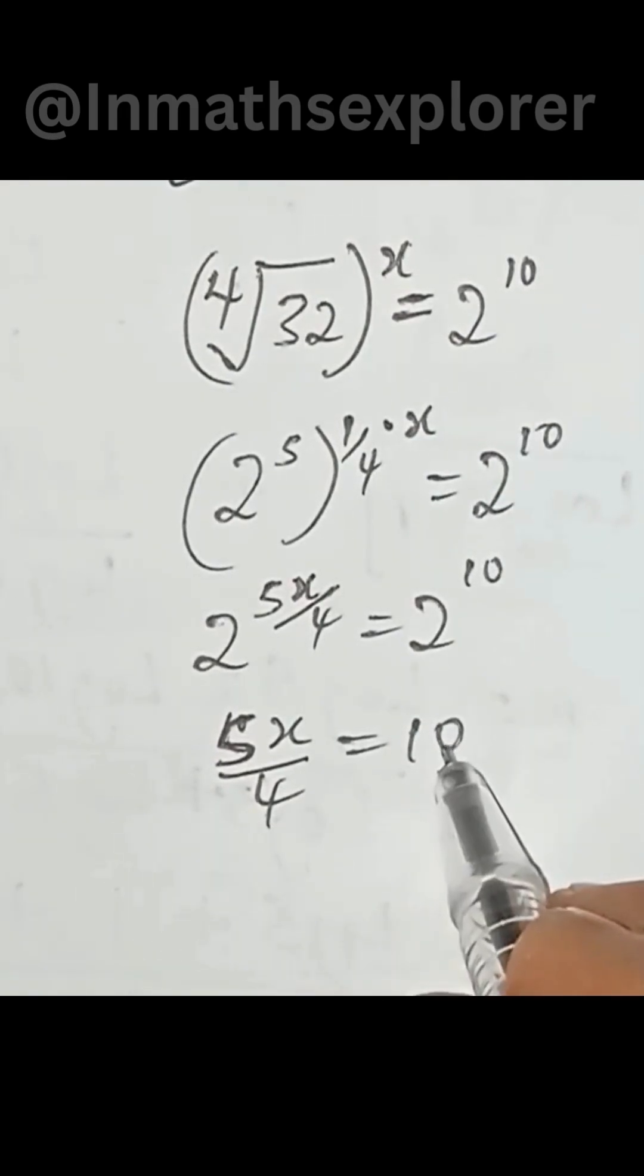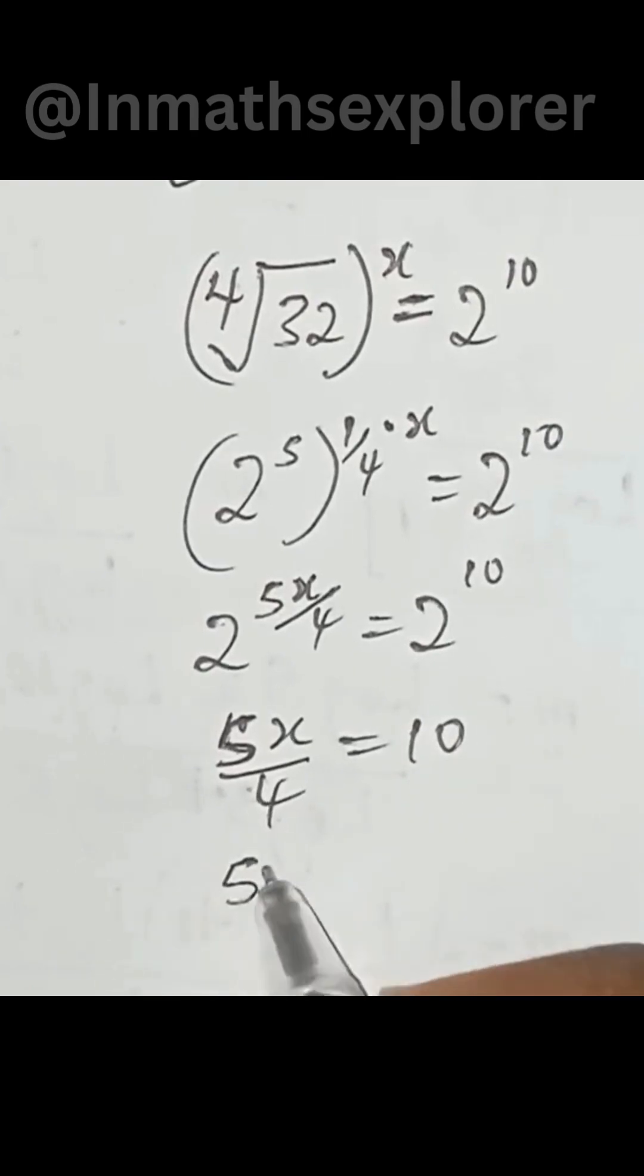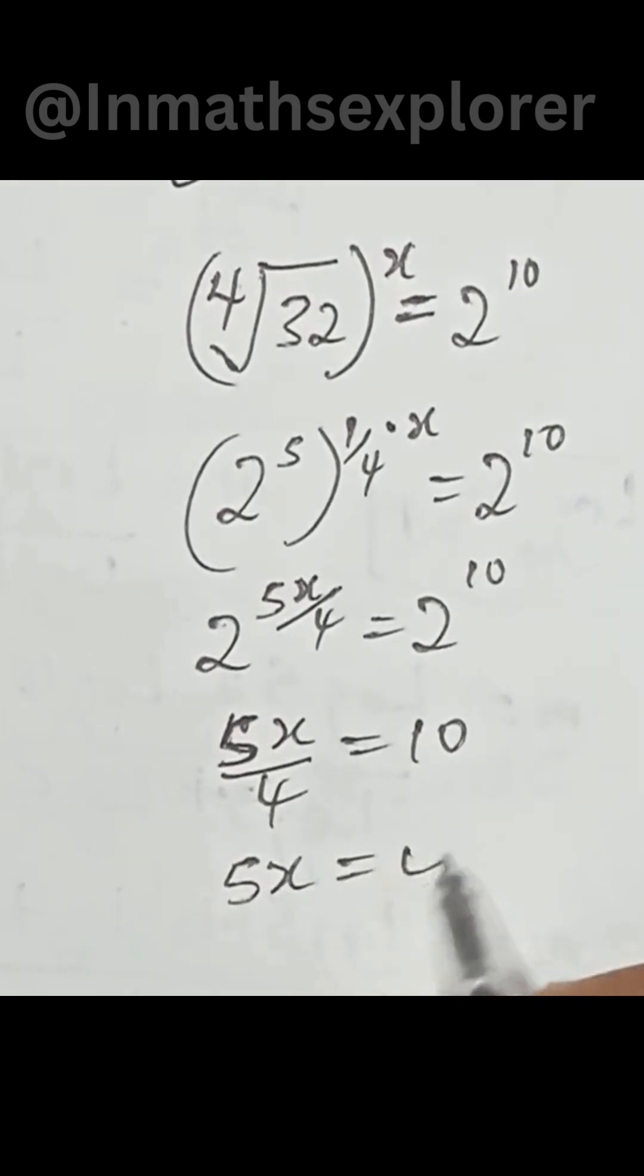10 multiplied by, 4 multiplied by 10. We have 5x equal to 40.